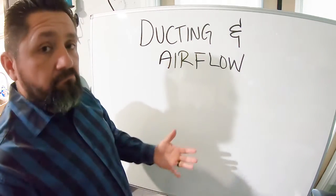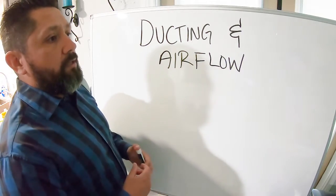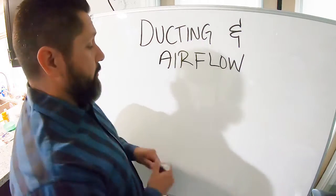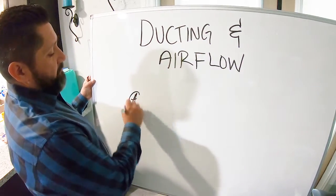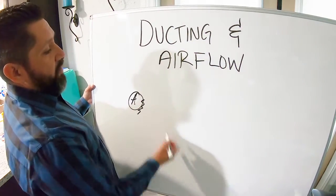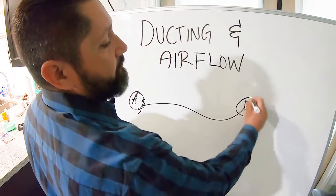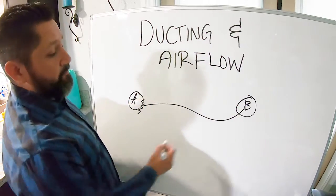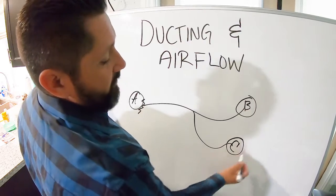So that's supply and return. Now imagine ducting and airflow like irrigation or a sprinkler system in your front yard. Say you got this section right here, point A, and it's the front of your grass and it gets nice and watered exactly the way it needs to. But over here at point B, that part of the grass does not get water. And then you got part C that gets okay water but not too much.